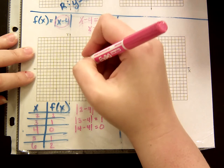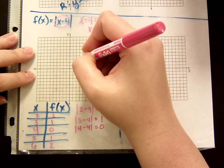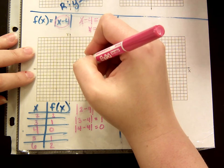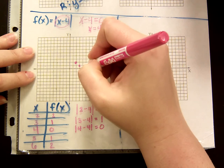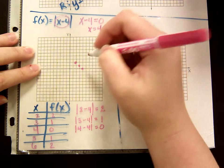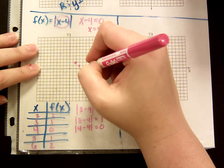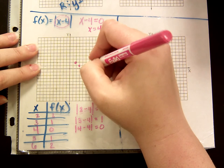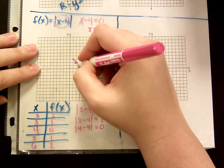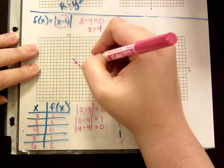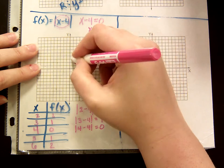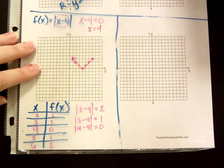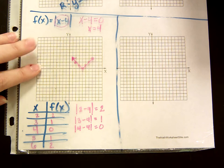So I have the points: (2, 2), (3, 1), (4, 0), (5, 1), and (6, 2). I could extend it further out, but that's enough to graph it.